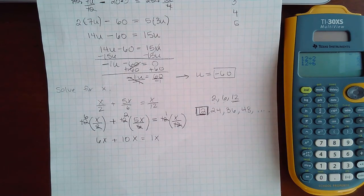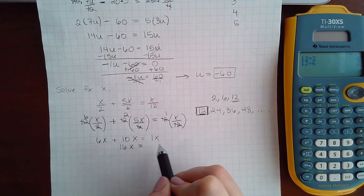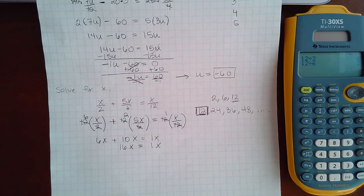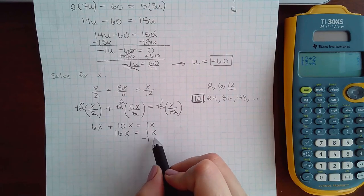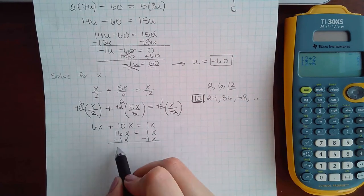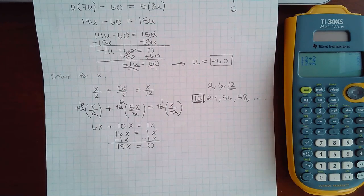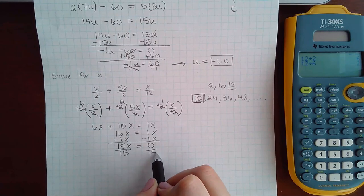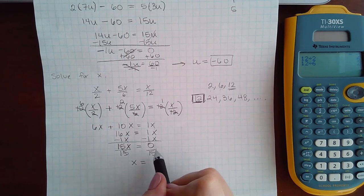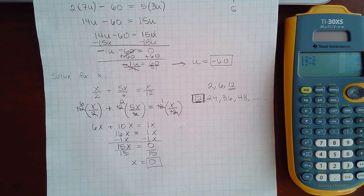Now step 3 is to combine like terms on each side. These are like terms, so I get 16x. There's only one term on this side, so I'm just rewriting it. And then finally, we need to move the variable terms to one side. So I'm going to move this to the left. I get 15x equal to 1x minus 1x is nothing, nothing left. So I do have to write the 0. Then the last step is to divide by the coefficient. So when I divide by the coefficient, I get x equals, and 0 divided by 15 is 0. So my answer here in this case is 0.